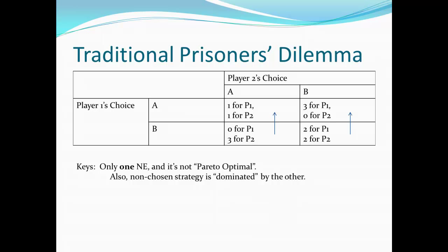Player 2 would go through a similar line of reasoning. If player 1 plays A, player 2 either gets 1 by playing A or nothing by playing B — so player 2 would choose A. If player 1 plays B, player 2 could play A and get 3, or play B and get 2. So player 2 would also choose A. A is a dominant strategy for player 2, just as it was for player 1. So both players playing A is our Nash equilibrium — both players are playing their best response. If player 1 plays A, player 2's best response is also A, and vice versa.